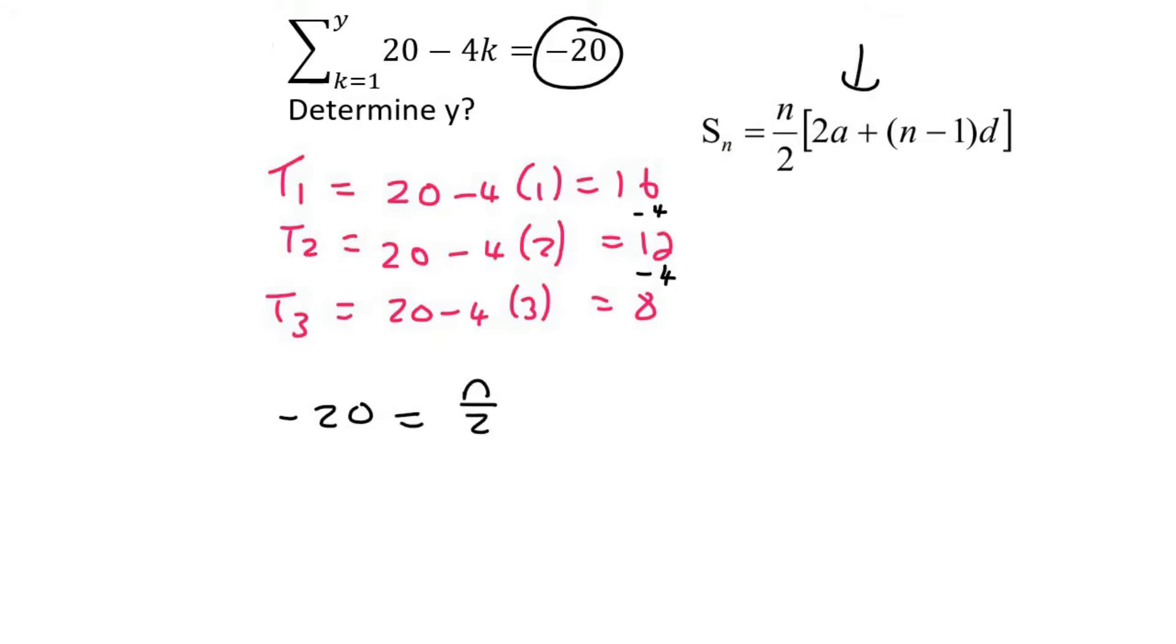n we don't know, so we go n over 2, and then 2 times a. a was first term, which is 16, and then n minus 1, and then the common difference is negative 4.